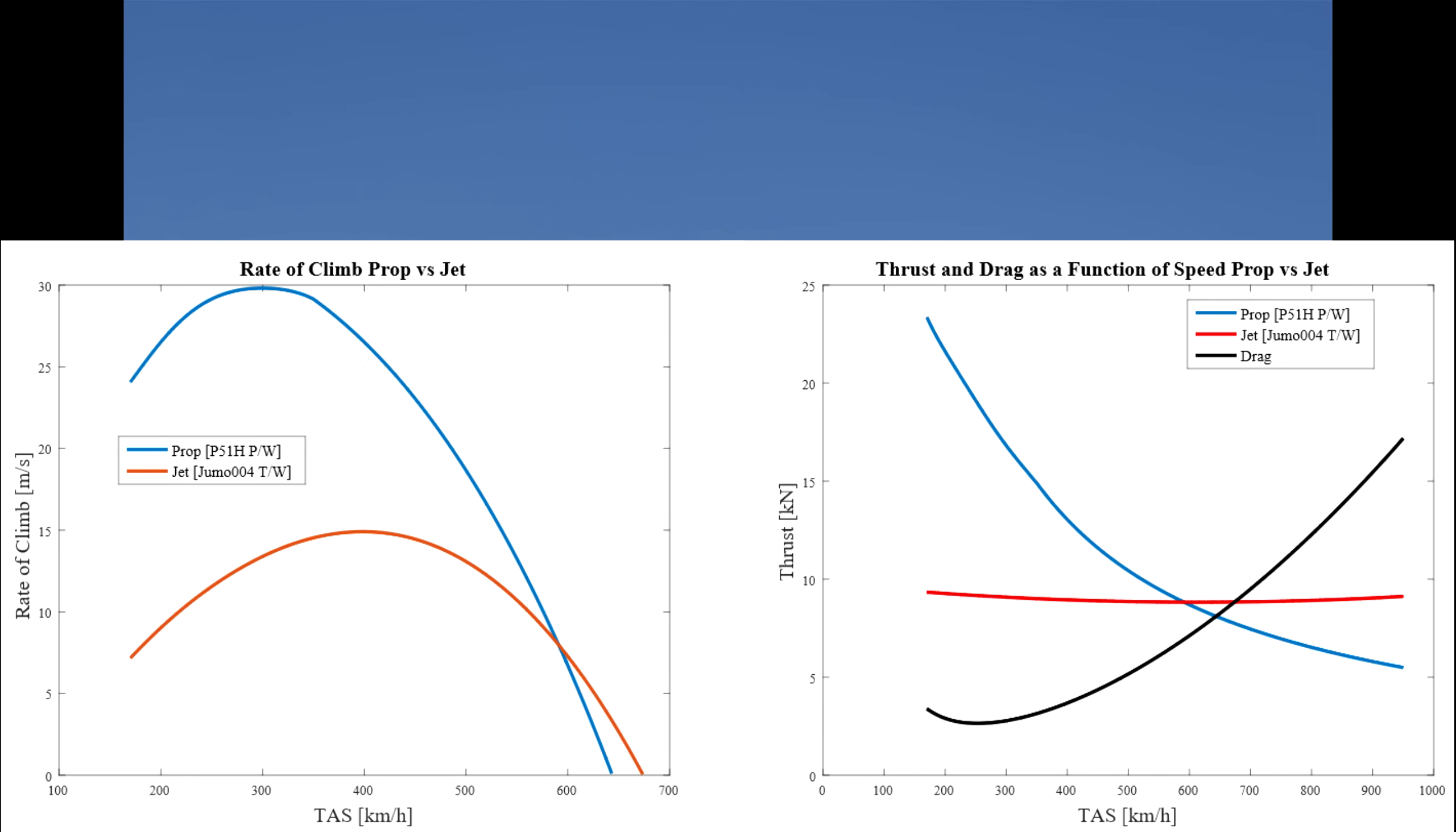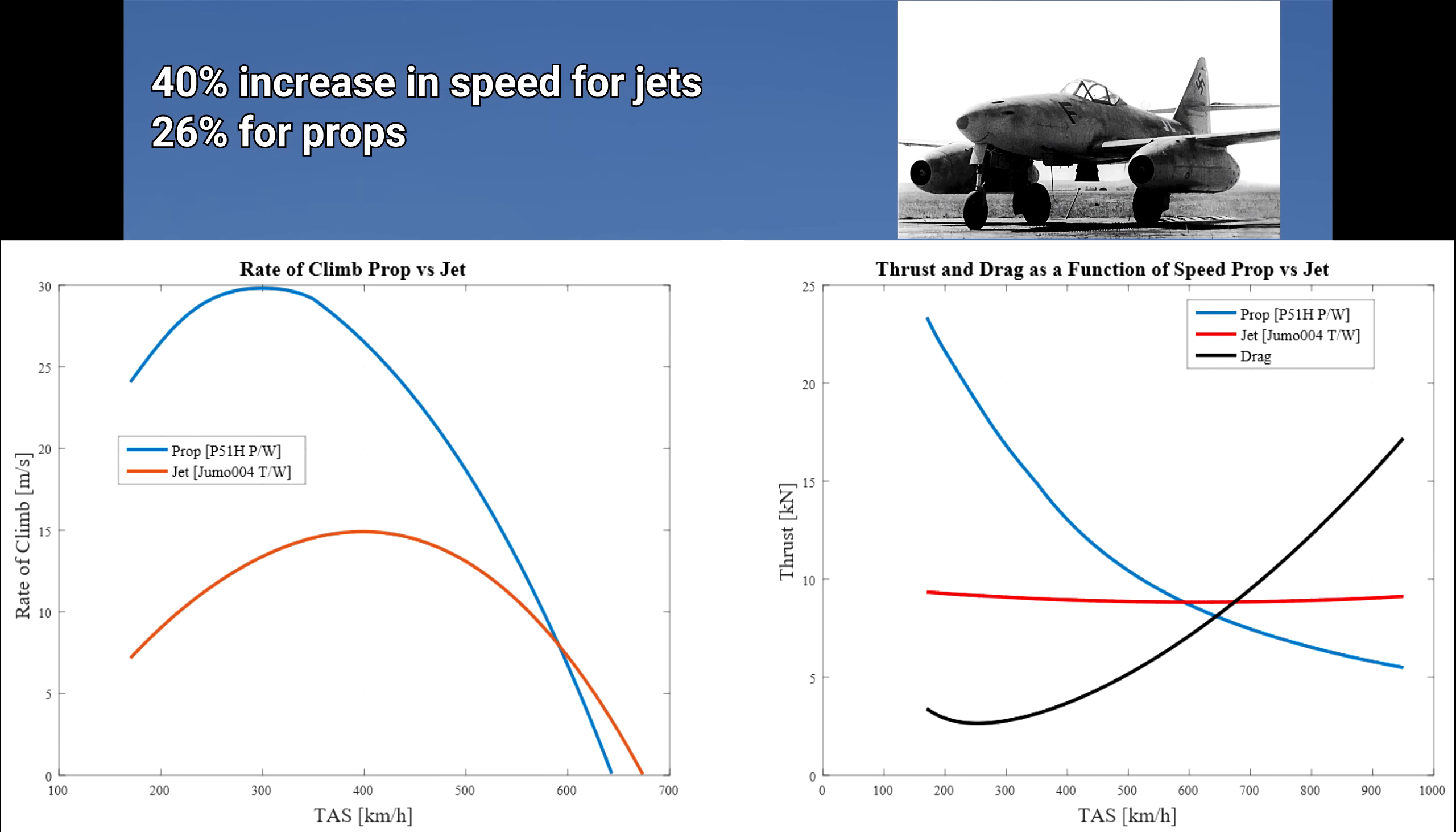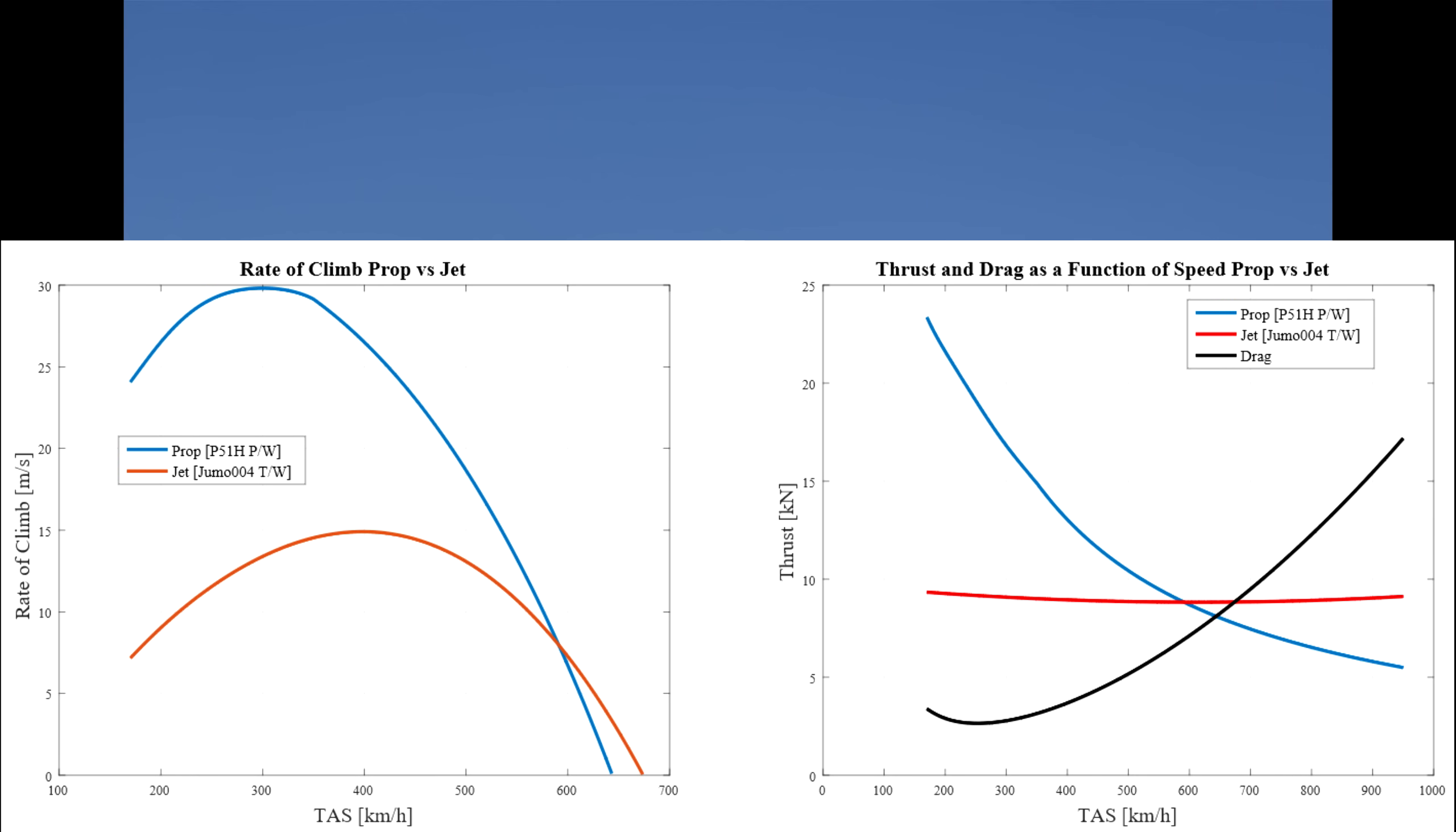In reality though, the jet aircraft would weigh less since it doesn't need a 200 kg propeller, and wouldn't have any need for radiators which would reduce drag. Mounting two jet engines would increase speed by 40% compared to only increasing speed by 26% if you mount two piston engines due to prop thrust reduction as speed increases. That's what they did to make the ME-262 substantially faster than prop aircraft. A further advantage of the jet engine is its use of relatively lower grade fuel, since engine knock was not a concern on a jet engine.